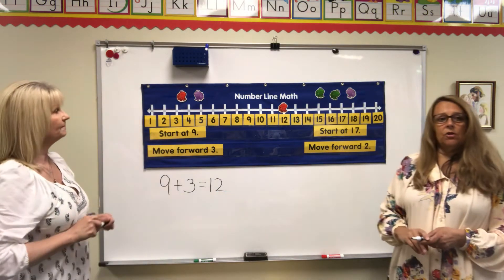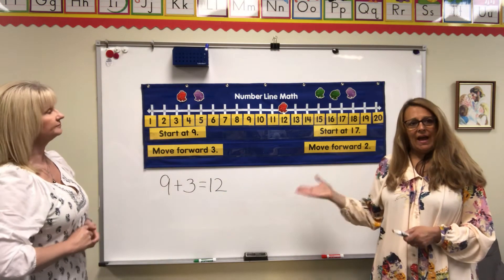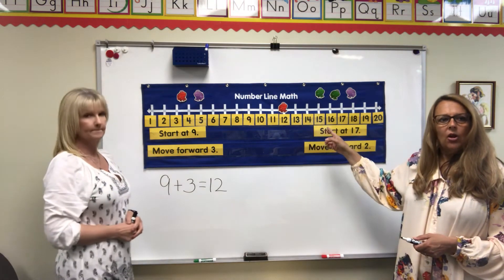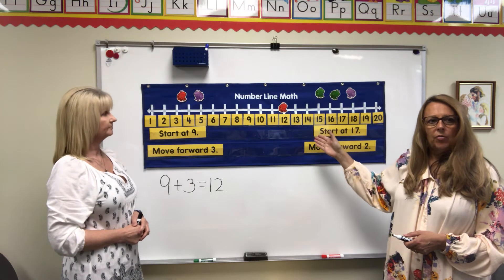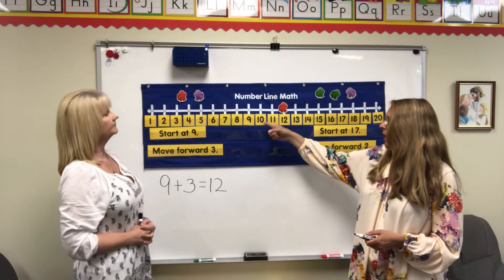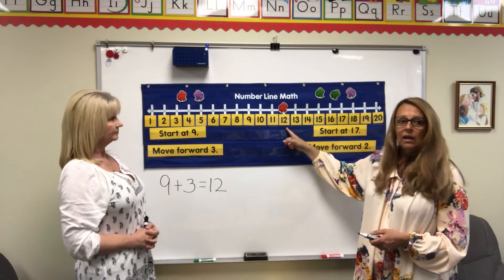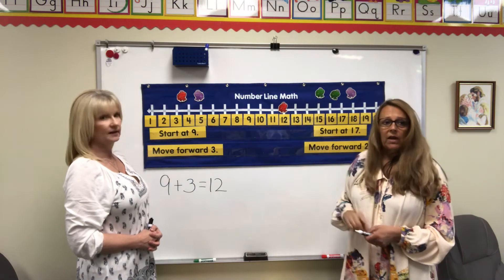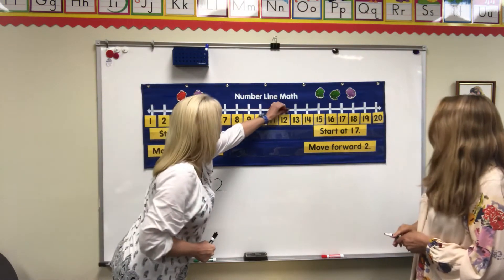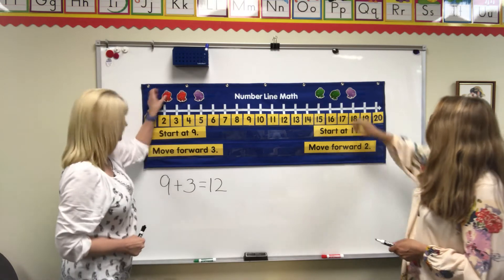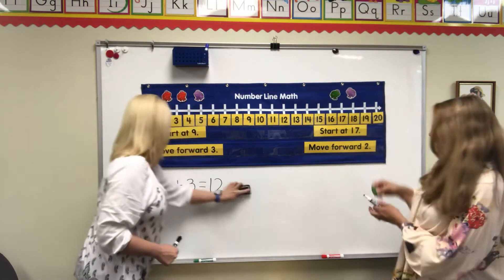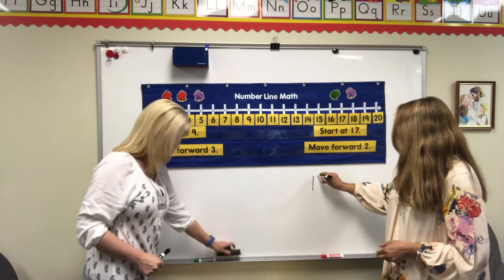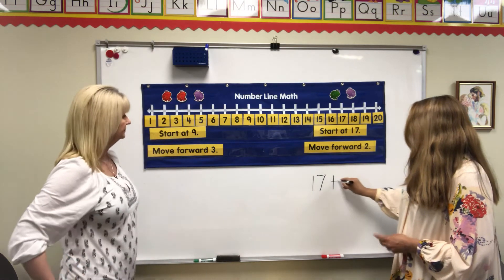Boys and girls, are you noticing that when you're doing adding or addition, you're always going to come up with a larger number — a bigger number? Right! You started at 9, you added 3, and you got 12. 12 is larger than 9. That's correct!